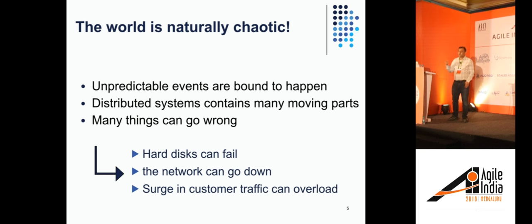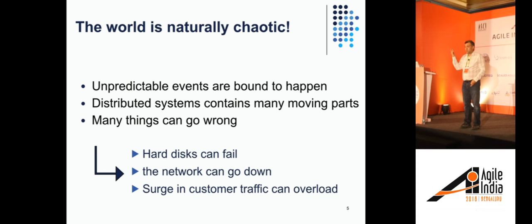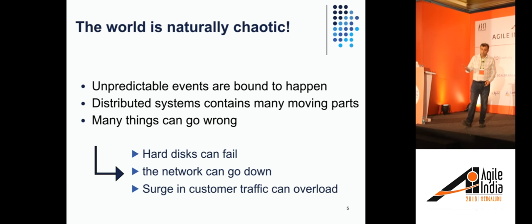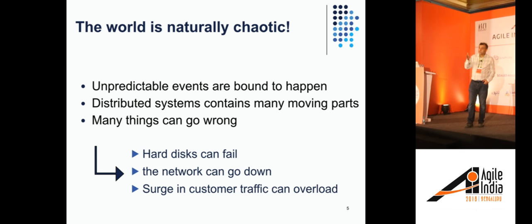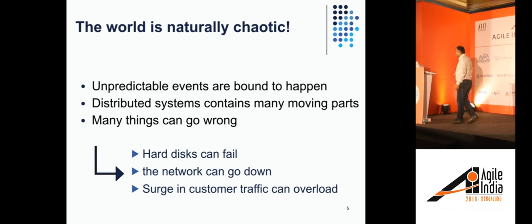The problem is that the world is chaotic. We are operating at large scale — deploying applications in AWS, Google Cloud, Azure, whatever your cloud environment is — and things fail at scale. There are many moving parts of a distributed system: disk storage, network, things can go wrong. Hard disks fail, networks go down, etc. The world is naturally chaotic. There is no way you can prevent that chaos from happening, but what you can do is be prepared for it and know what to do when it actually happens.